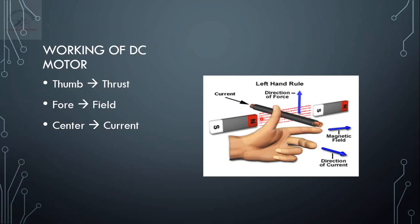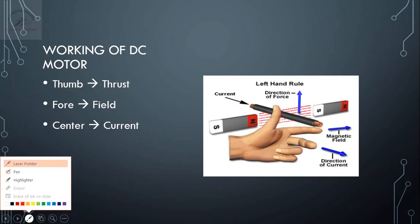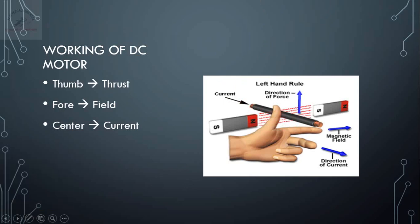Here a conductor is placed. The direction of the magnetic field is from north to south, corresponding to the forefinger. If the direction of the current in the conductor is like this, then this conductor will move up. I hope this rule is clear to everyone, because it is very important to understand the working of a DC motor.